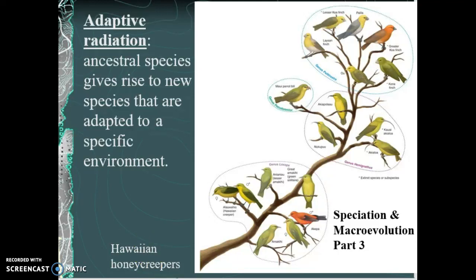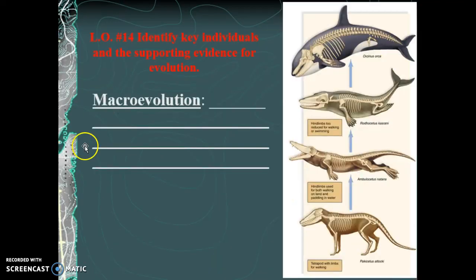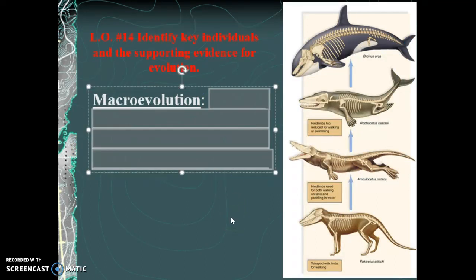When we look at the evidence for speciation — fossil records, anatomical records, molecular information, biogeography, etc. — we see the bigger picture. The bigger picture of evolution is what's called macroevolution.